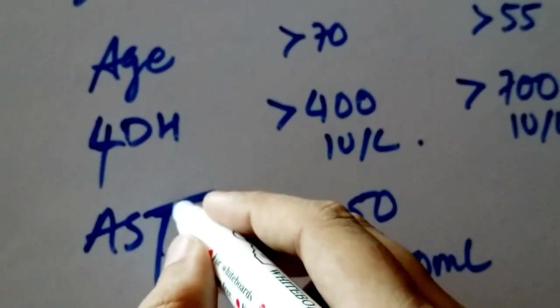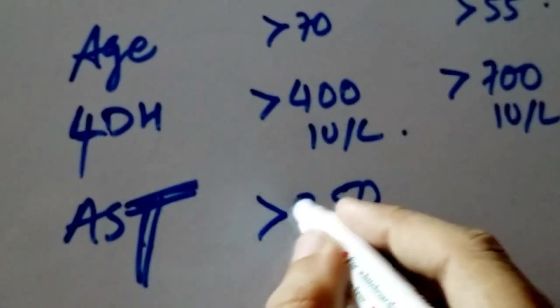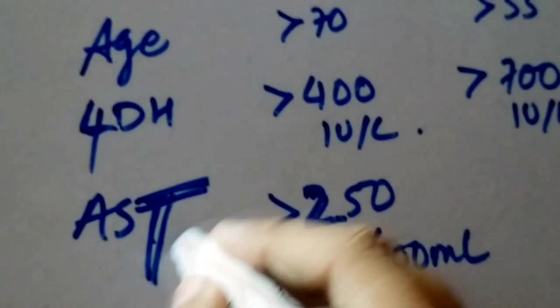AST is greater than 250 international units per 100 milliliters. And the way I remember this is, a 2 has 2 strokes. And the number 2 also starts with the letter T. So T and 2.